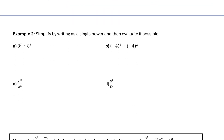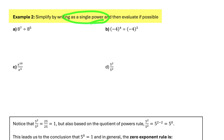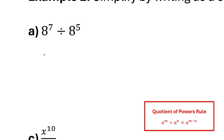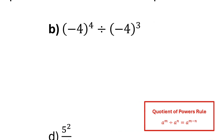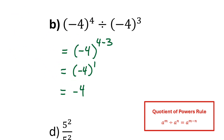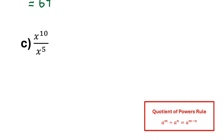Let's practice using this rule in example 2 — simplify by writing as a single power and then evaluate if possible. Part a: I have two powers of 8 being divided. I keep that base of 8 and subtract the exponents, 7 minus 5, making this equal to 8 to the power of 2. And 8 squared is 64. Part b: I have two powers of negative 4 being divided. I keep that base of negative 4 and subtract the exponents, 4 minus 3, giving negative 4 to the power of 1, which is just negative 4.